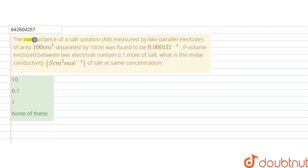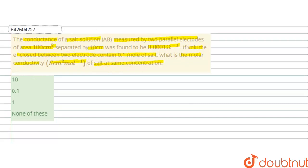Hello students. The question is: conductance of a salt solution AB, measured by two parallel electrodes of area 100 cm² separated by 10 cm, was found to be 0.0001 ohm inverse. If the volume enclosed between the two electrodes contains 0.1 mole of salt, what is the molar conductivity in Siemens cm² per mole of the salt at the same concentration?